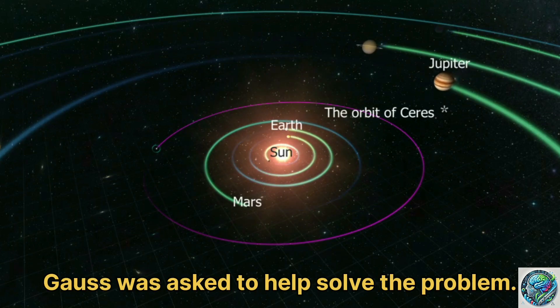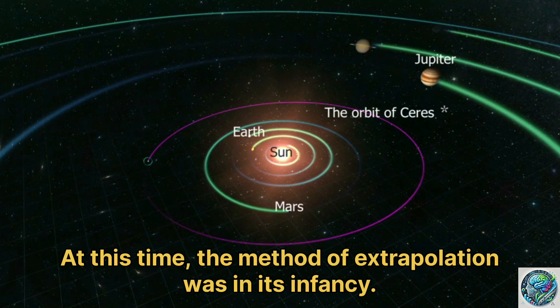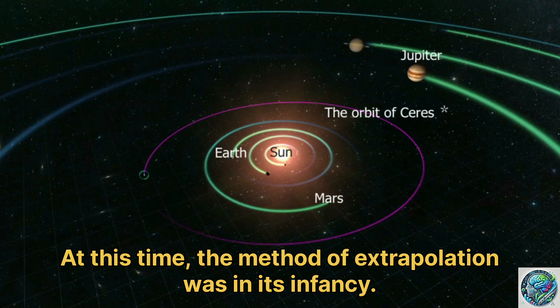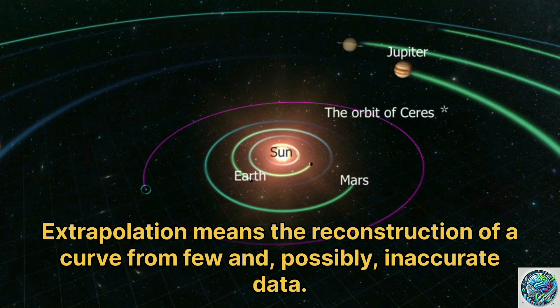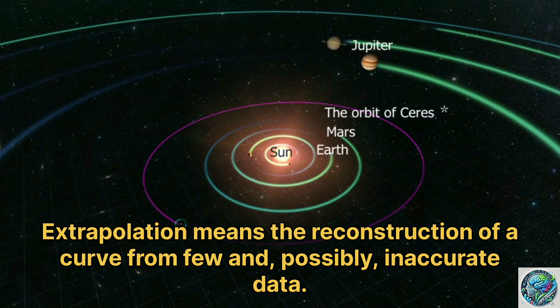Gauss was asked to help solve the problem. At this time, the method of extrapolation was in its infancy. Extrapolation means the reconstruction of a curve from few and possibly inaccurate data.